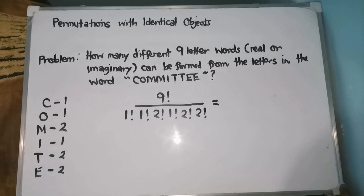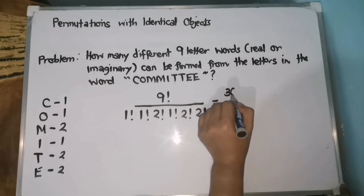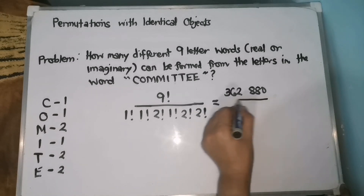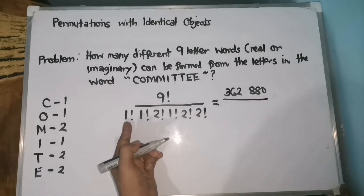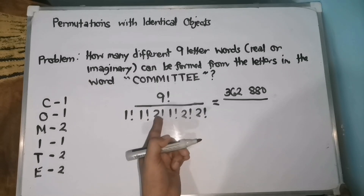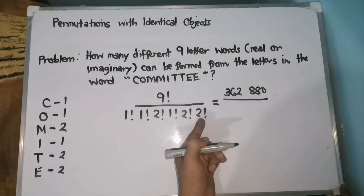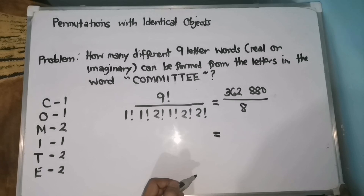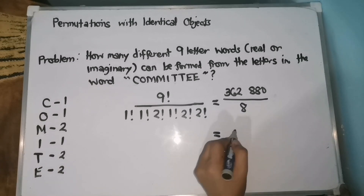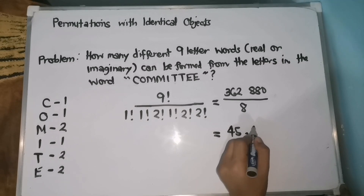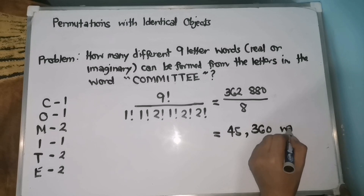To simplify this one, pwede natin kuhanin yung 9 factorial as 362,880. Over — itong 1 factorial ay understood 1 na siya, so doon lang tayo sa may 2. So 2 factorial is 2, that is 2 times 2 times 2 — we have here 8. Then, 362,880 divided by 8 — we have here 45,360 ways.